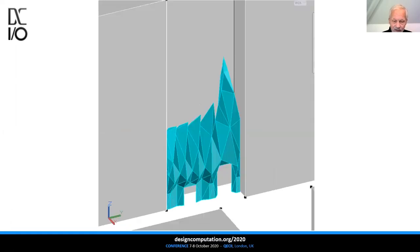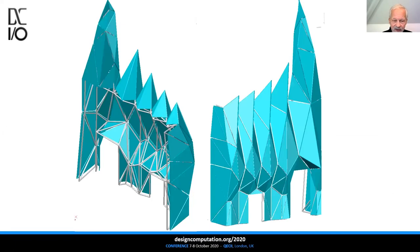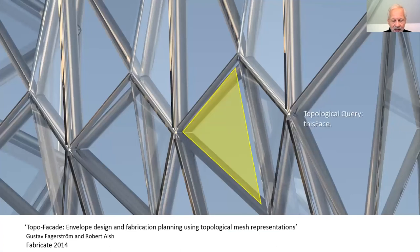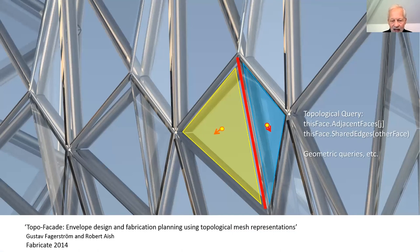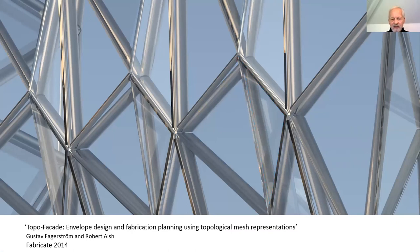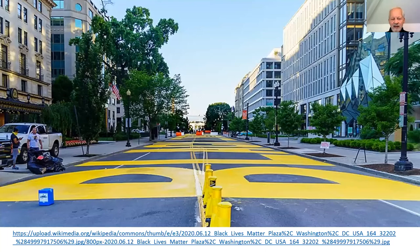Looking at another example from a manufacturing point of view: this is a facade I worked on with Bureau Happold facades, where the whole detailing and construction is based on topology. We have one face and another face, and we can find the shared edge between them, find the face normals, and using that, construct a bisector for the shared edge — which is the basis for all the construction of this model. When we change that model, it all propagates through. And this facade is on the Black Lives Matter Plaza in Washington, D.C.